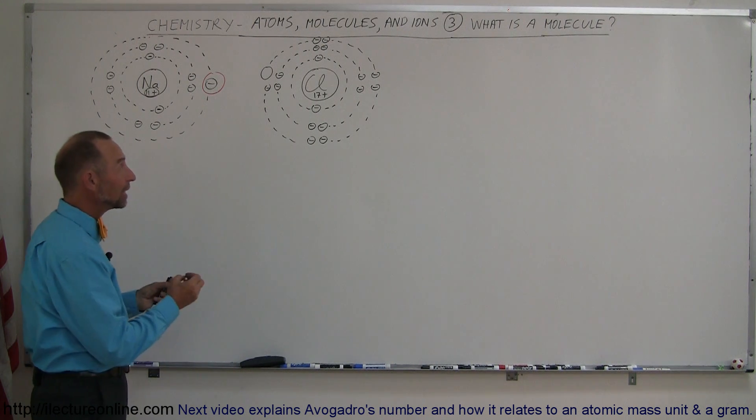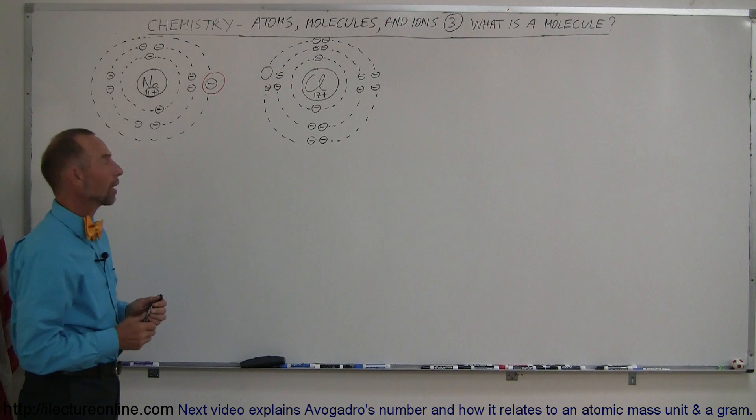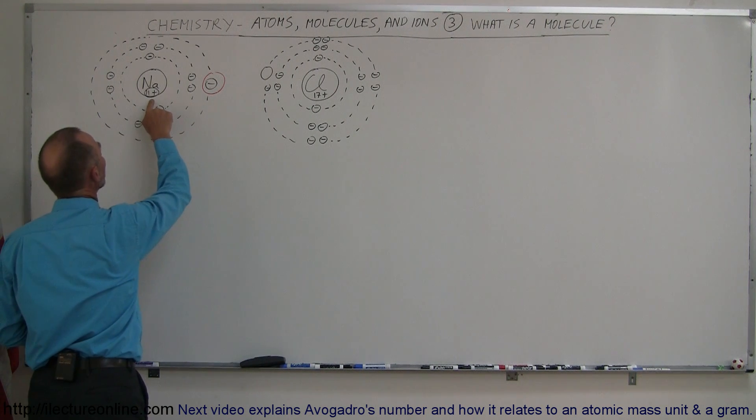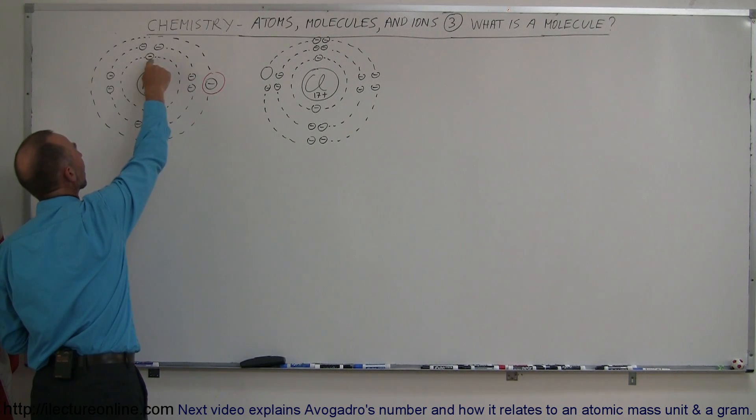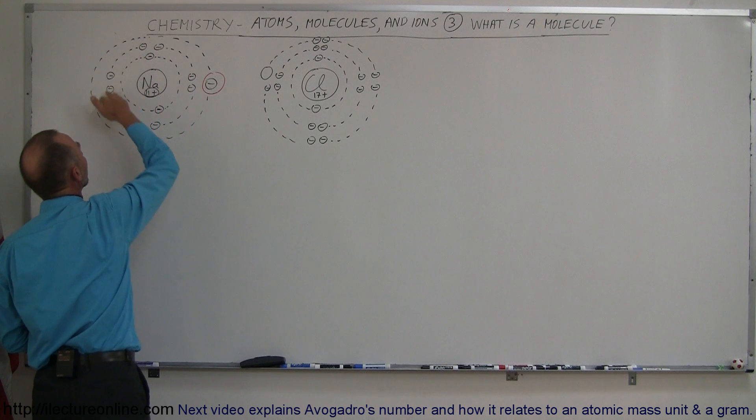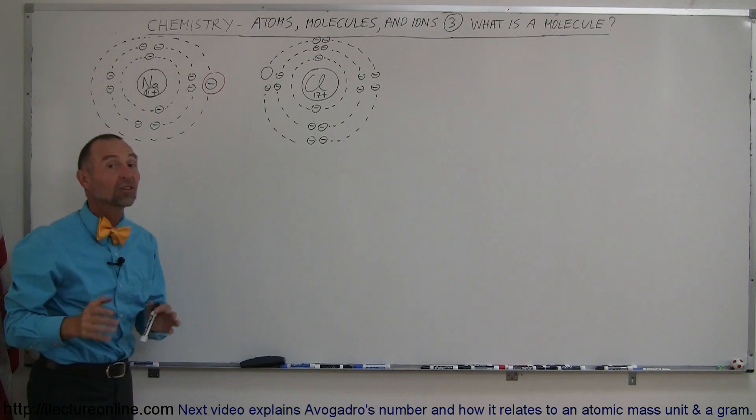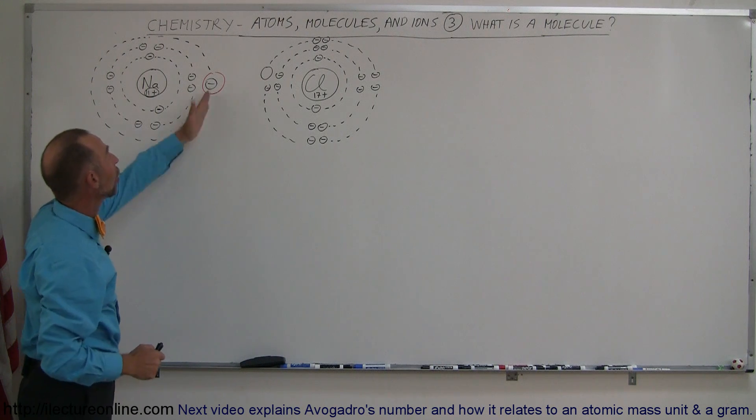Ions are atoms that either lose or gain an electron. So let's say we have a sodium atom right here, which has 11 protons in the nucleus, and therefore it has 11 electrons. It has 2 in the innermost energy level, it has 8 more in the second energy level, and finally the 11th electron is situated in the third energy level all by itself.